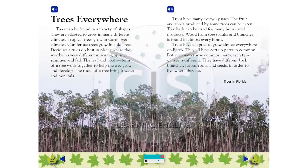The leaf and root systems of a tree work together to help the tree grow and develop. The roots of a tree bring in water and minerals.